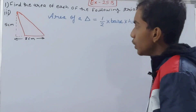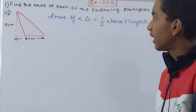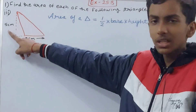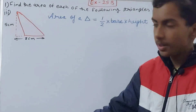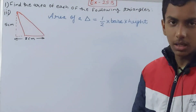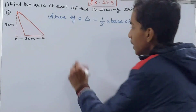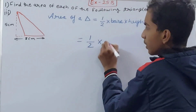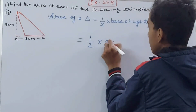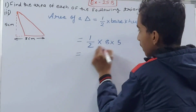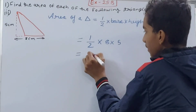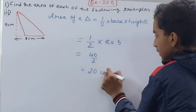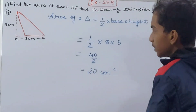For the next part, the height is given as 5 cm and the base is 8 cm. Area = 1/2 × 8 × 5 = 40/2 = 20 square centimeters.